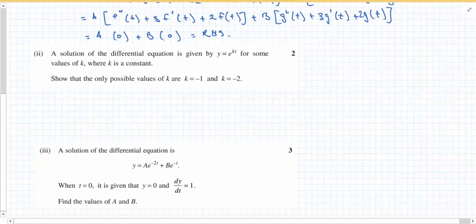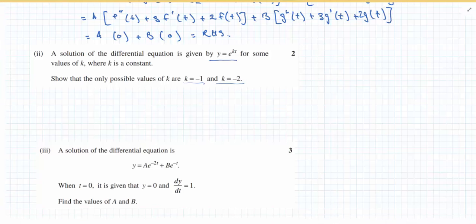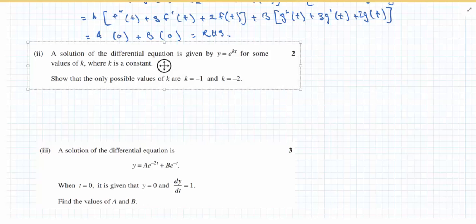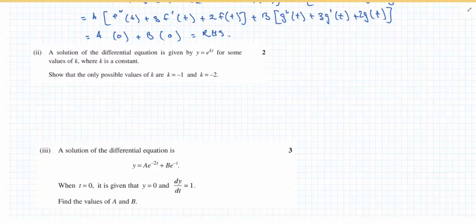Part 2 says a solution of a differential equation is given by y equals e to the kt for some value of k where k is a constant. So this y equals e to the kt is a solution. Show that the only possible values for k are k equals negative 1 and negative 2. Okay, so basically I'm going to substitute that equation in. That's really with the information given is my only option. And I'm going to hope that it all works out.